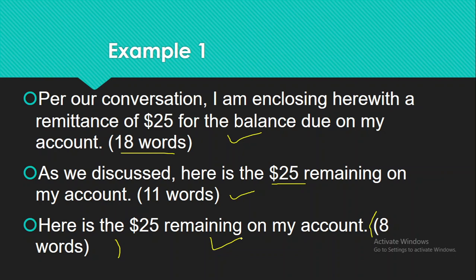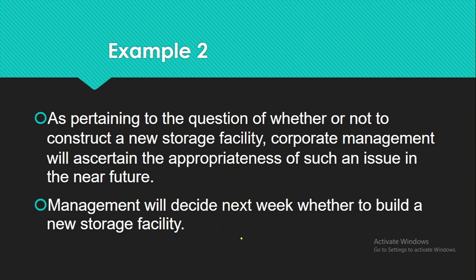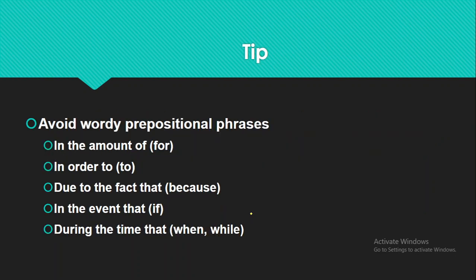Let's have a look at another example: 'As pertaining to the question of whether or not to construct a new storage facility, corporate management will ascertain the appropriateness of such an issue in the near future.' The same message can be conveyed like this: 'Management will decide next week whether to build a new storage facility.' The second version uses simple words and simple expression, and you can see it is more comprehensible, easier to read, and easier to understand.